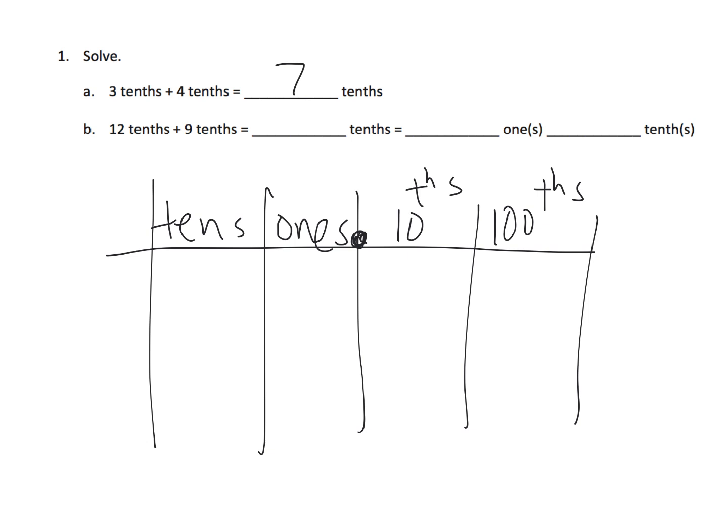So underlying this is this concept of saying, if 3 tenths, 3 tenths can be represented as 1, 2, 3, 4, then 4 tenths can be represented as 1, 2, 3, 4, and so in all, we can say we have, in all, we have 7 tenths, alright?